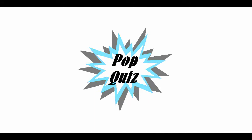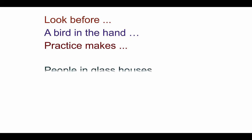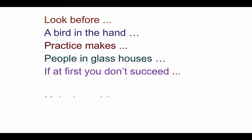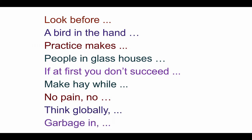It's time for a pop quiz—let's test your knowledge of a few proverbs common in American English. Provide the end to each proverb as I read it: Look before… A bird in the hand… Practice makes… People in glass houses… If at first you don't succeed… Make hay while… No pain, no… Think globally… Garbage in… I'd be willing to bet you got all of them. These proverbs are so common that we only need to say the first part, because it's assumed that people would get the meaning without hearing the whole sentence.